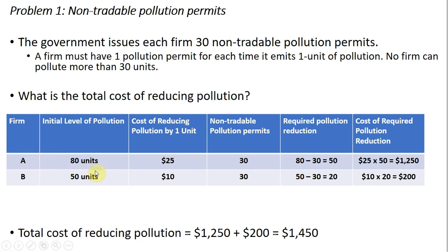Each firm is sitting on 30 pollution permits. Since Firm A is polluting 80 units and is only allowed 30 units, Firm A must reduce pollution by 50 units — that's 80 minus 30. Likewise, Firm B is polluting 50 units but is only allowed to pollute 30 units, so Firm B must reduce pollution by 20 units.